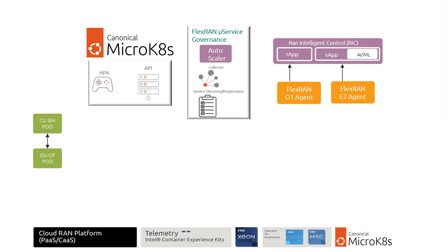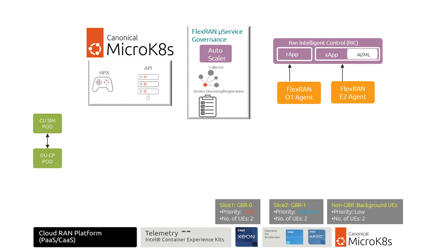Here is the whole autoscaling demo flow. There are three network slices in the demo; each slice holds two UEs. The three slices are differentiated by their scheduling priority based on SLA. Slice 1 has the highest scheduling priority, Slice 2 has medium priority, and Slice 3 contains background UEs which are all non-GBR services with the lowest priority.